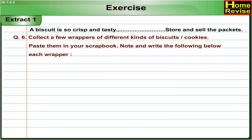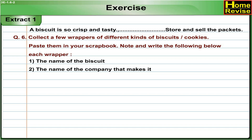Question 6: Collect a few wrappers of different kinds of biscuits or cookies and paste them in your scrapbook. Note and write the following below each wrapper: 1. The name of the biscuit. 2. The name of the company that makes it. 3. The price mentioned on the packet.